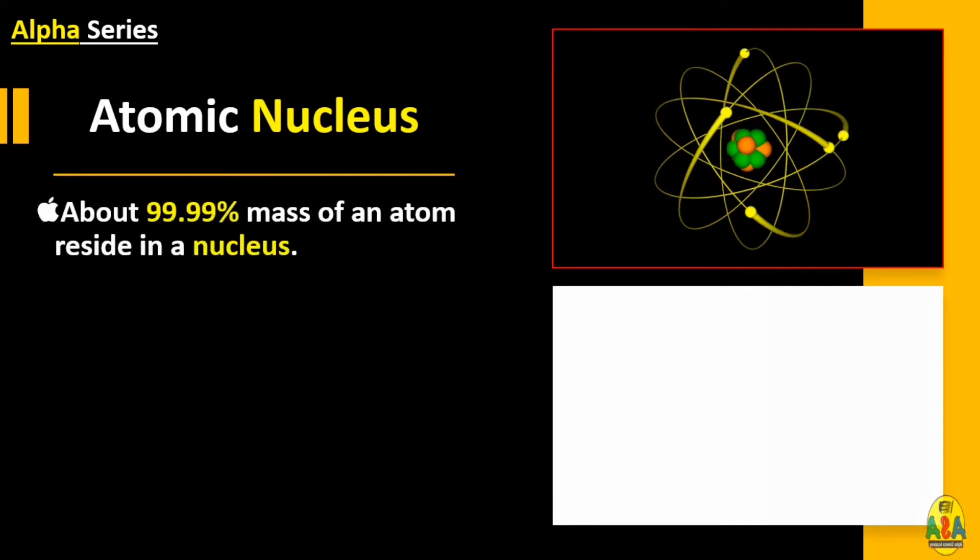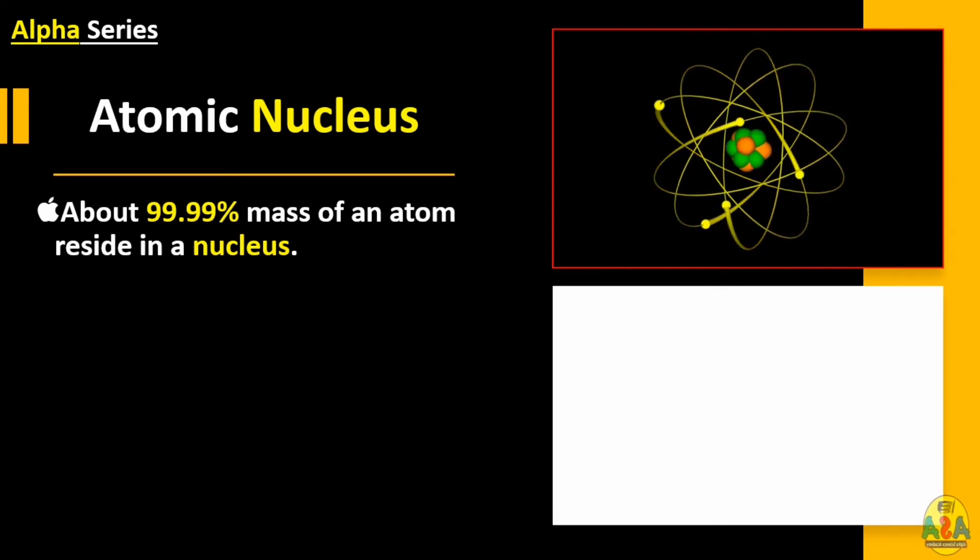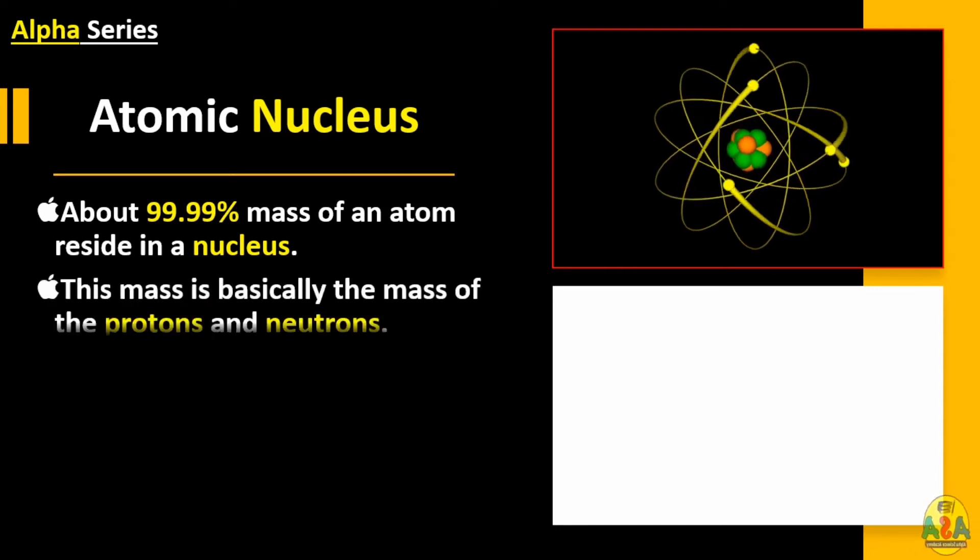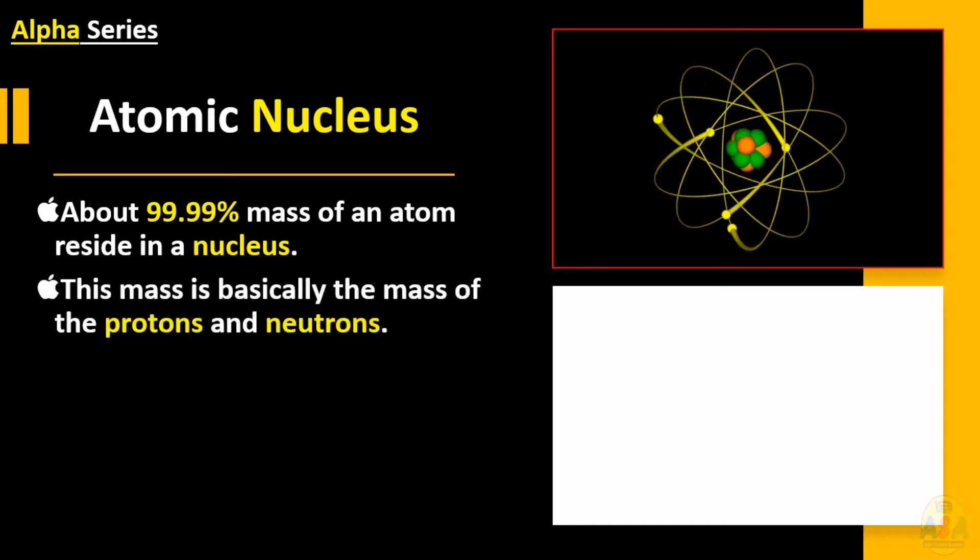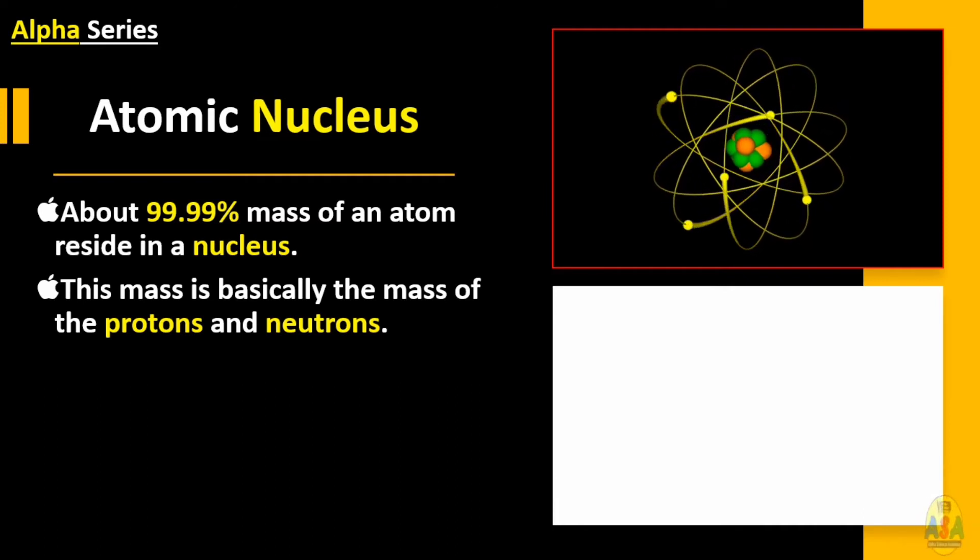When we say that a nucleus is a very dense particle, that means about 99.99 percent mass of an atom resides in a nucleus. This mass is basically the mass of the protons and neutrons which are collectively known as nucleons.